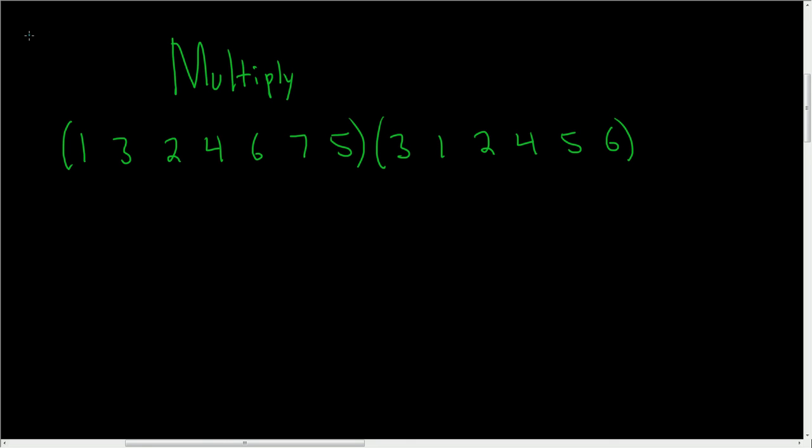In this video, we're going to carefully multiply two cycles in the symmetric group of degree 7, so in S sub 7. First, just for clarity, notice that the number 7 is missing over here. So 7 is actually fixed. What that means is that 7 is just going to 7. Nothing is happening to the 7 here. It just gets sent right back to itself.